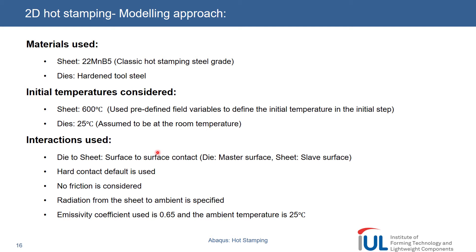We have a different set of flow curves implemented for the 22MnB5 at elevated temperatures, and we wanted to be clear about this because it has an effect on the simulation outcome. For the dies — hardened tool steel — we will make use of a pseudo rigid body approach. We are only interested in the thermal properties of the die material because the mechanical properties are not important: we start with deformable bodies but then turn them into mechanically rigid bodies.